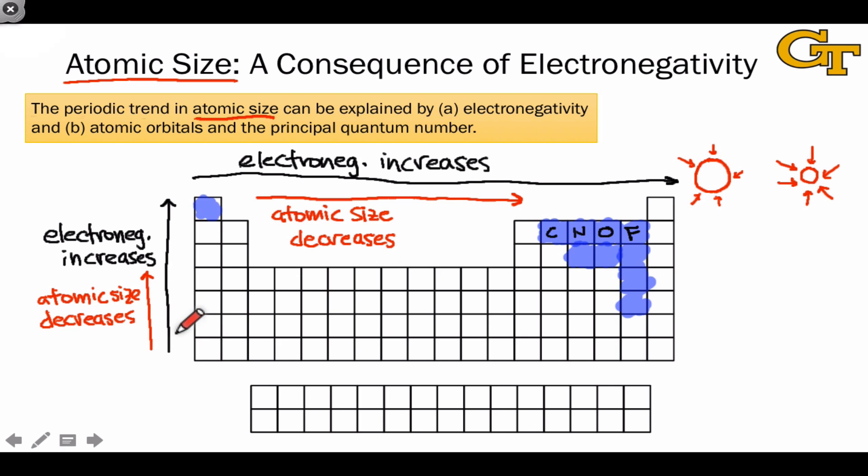And I'll just briefly mention before leaving this slide that the trend going from bottom to top along a group has more to do with the principal quantum number and the valence shell, the size of the orbitals in the valence shell, than it does with electronegativity per se, but the trend still follows the electronegativity trend.